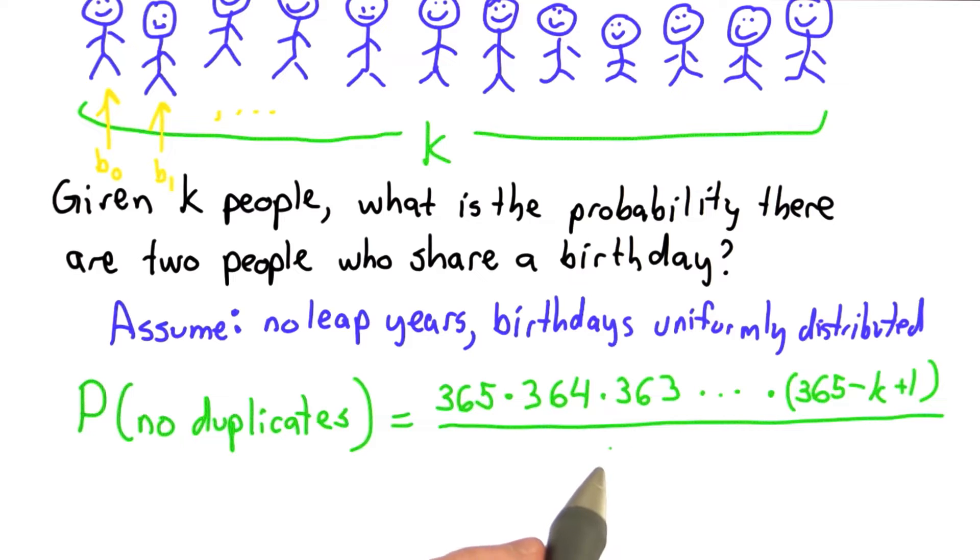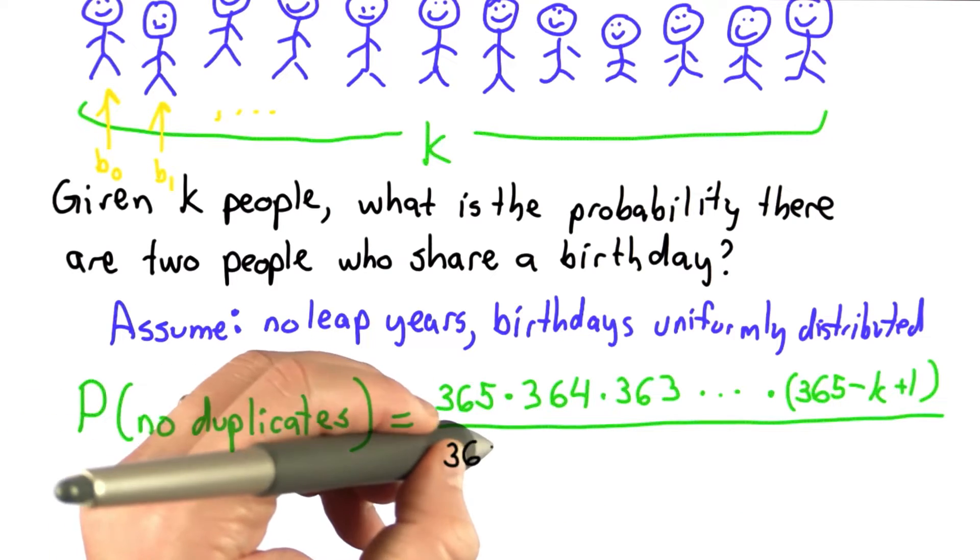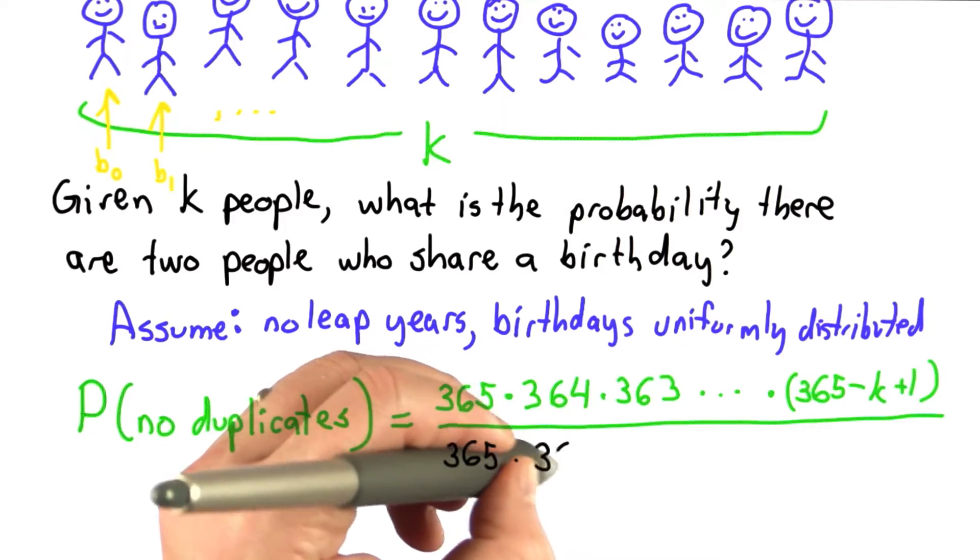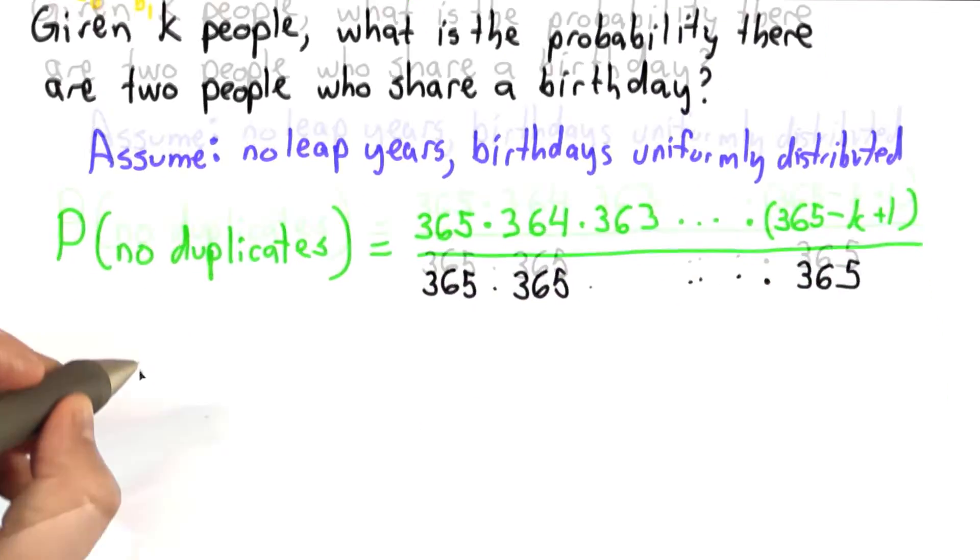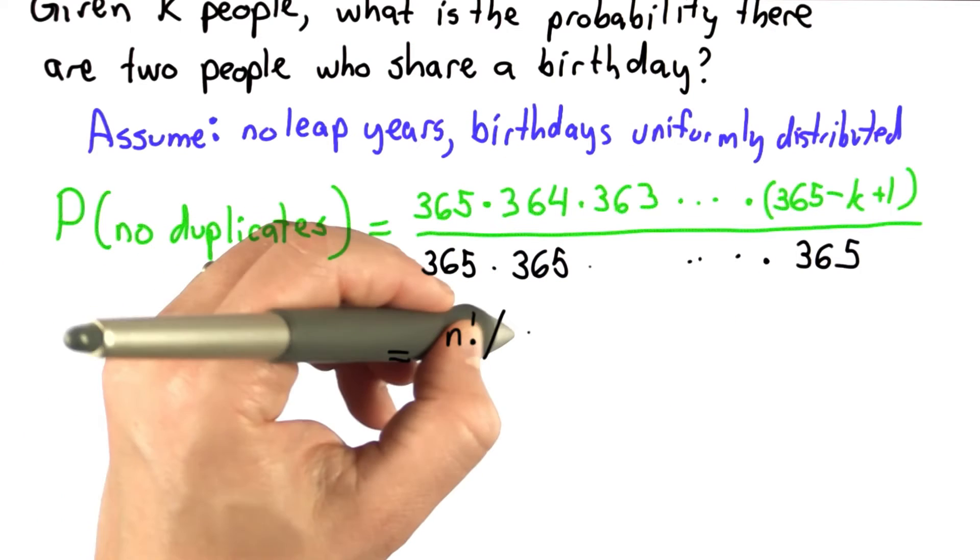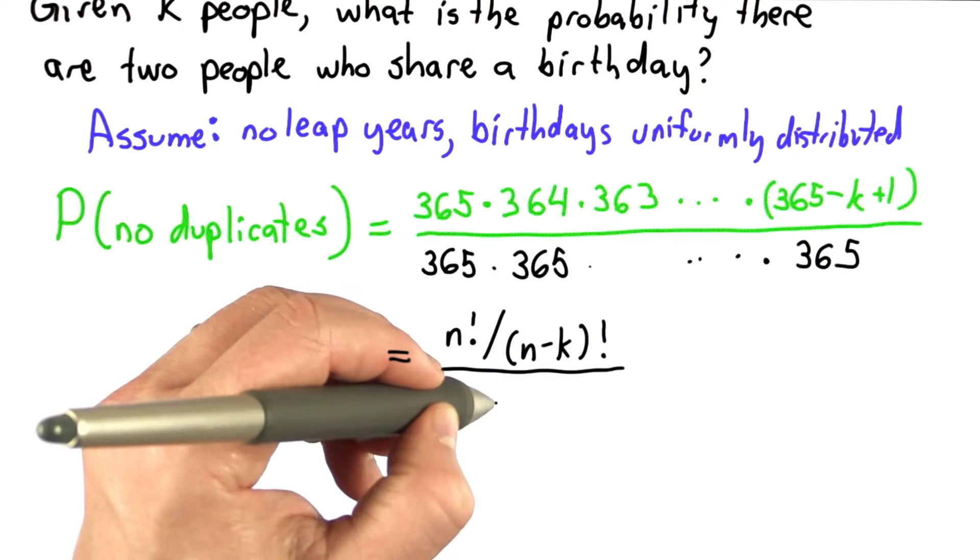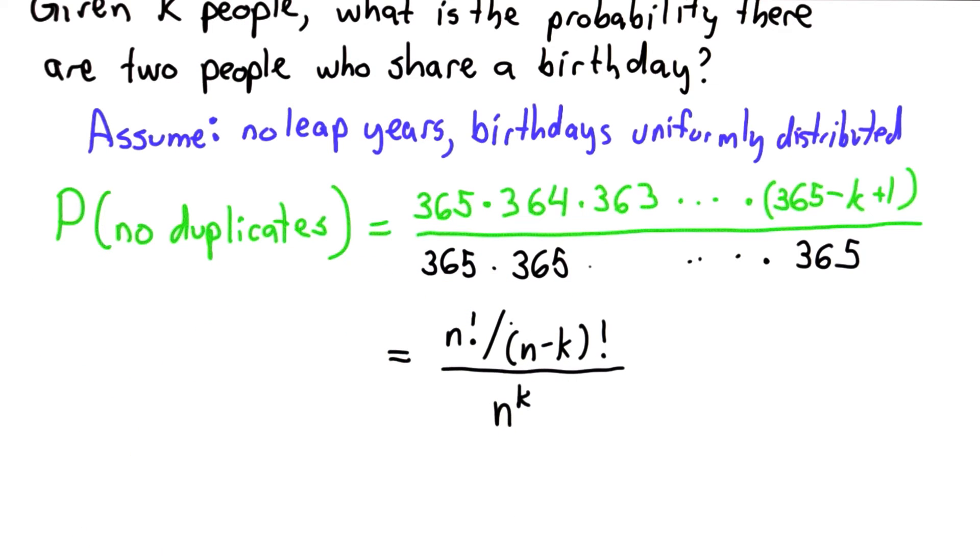That's the number of ways to assign birthdays with no duplication. We're trying to compute the probability, so we're going to divide that by the number of ways to assign with duplication, which is just 365 choices for each person. In general, this first value is n factorial divided by n minus k factorial, and the bottom result is just n to the k. n is the number of possible days, or the number of possible hash outputs. k is the number of trials.